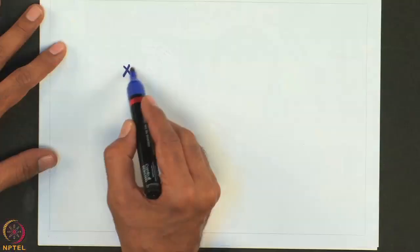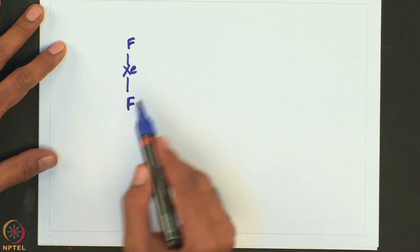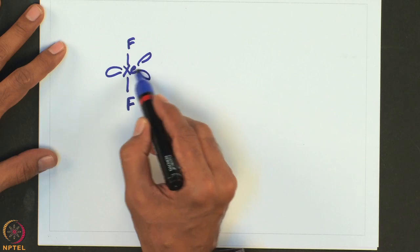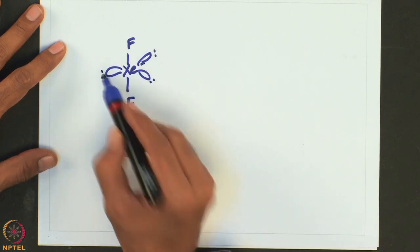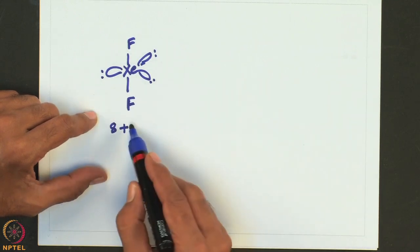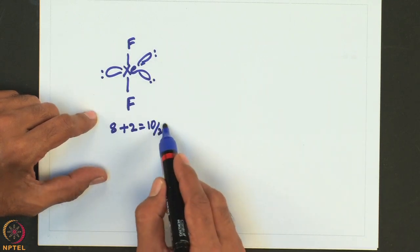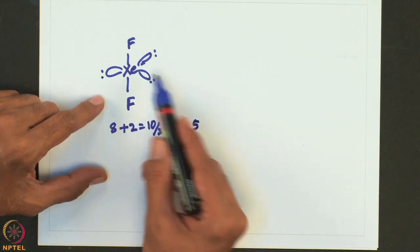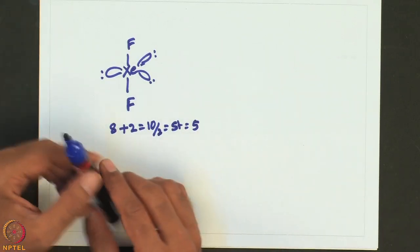To determine the structures and geometries of xenon fluorides, you can use VSEPR theory very effectively. For XeF2: it is linear; the geometry is trigonal bipyramidal. Xenon has 8 electrons, plus 1 each from 2 fluorines gives 10 electrons total; steric number = 10/2 = 5, with 2 bonding pairs and 3 lone pairs — the best geometry is trigonal bipyramidal and the shape is linear.